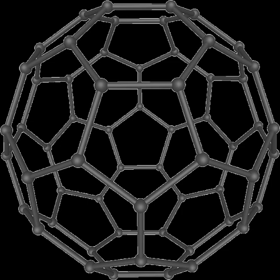Nanotubes are cylindrical fullerenes. These tubes of carbon are usually only a few nanometers wide, but they can range from less than a micrometer to several millimeters in length. They often have closed ends, but can be open-ended as well. There are also cases in which the tube reduces in diameter before closing off. Their unique molecular structure results in extraordinary macroscopic properties, including high tensile strength, high electrical conductivity, high ductility, high heat conductivity, and relative chemical inactivity. One proposed use of carbon nanotubes is in paper batteries, developed in 2007 by researchers at Rensselaer Polytechnic Institute. Another highly speculative proposed use is to produce high-tensile carbon cables required by a space elevator.